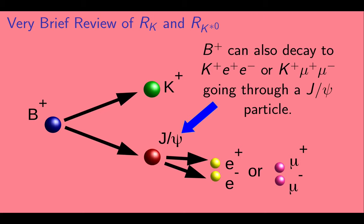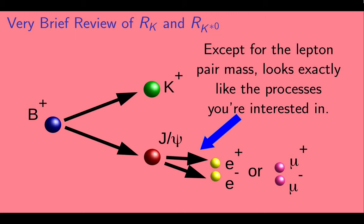So a B plus meson can also decay to a K plus and a lepton-anti-lepton pair through a particle called the J psi meson. Except for the lepton pair mass, this looks exactly like the process you're interested in. In other words, if the decay proceeds through a J psi, the mass of the lepton-anti-lepton pair will cluster close to the mass of the J psi. Otherwise it won't. But in other respects, the two decays look the same.